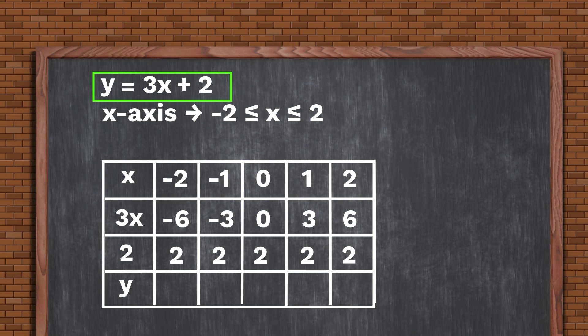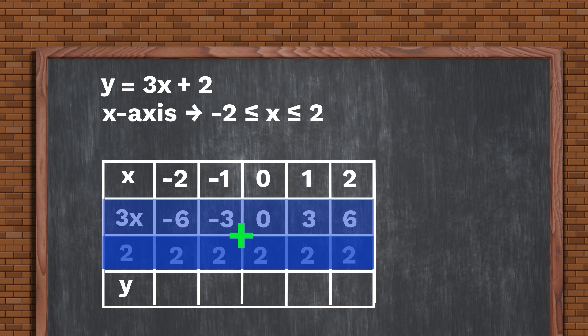Now, remember that y equals 3x plus 2. So all we need to do is add row 2 and row 3, because row 2 stands for 3x, and row 3 stands for plus 2.